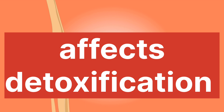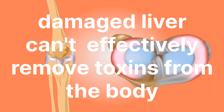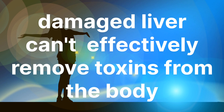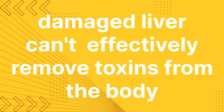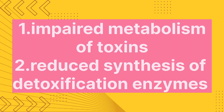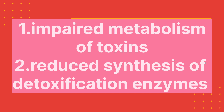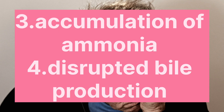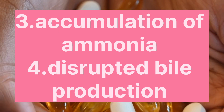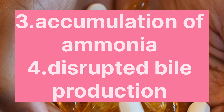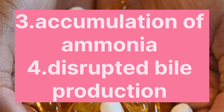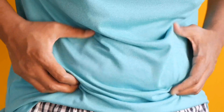Number ten: effects on detoxification. When the liver is damaged, its ability to effectively remove harmful substances from the body is compromised. Ways in which a damaged liver affects detoxification include: impaired metabolism of toxins, reduced synthesis of detoxification enzymes, accumulation of ammonia, and disrupted bile production. A damaged liver can have systemic effects, impacting various organs and contributing to the progression of disease.